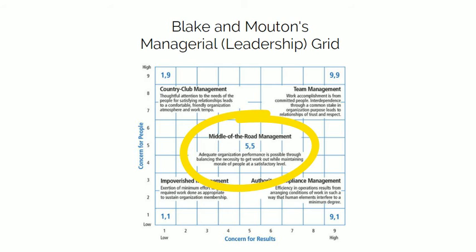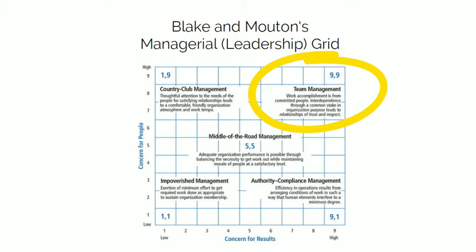At position 5,5, middle of the road management: adequate organization performance is possible through balancing the necessity to get work out while maintaining morale of people at a satisfactory level. The leader is described as expedient, prefers the middle ground, and swallows their convictions in the interest of progress. At position 9,9, team management: work accomplishment is from committed people. Interdependence through a common stake in organization purpose leads to relationships of trust and respect. The leader stimulates participation, acts determined, makes priorities clear, follows through, behaves open-mindedly, and enjoys working.